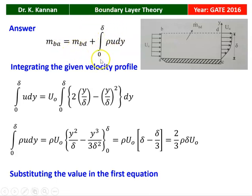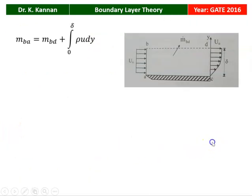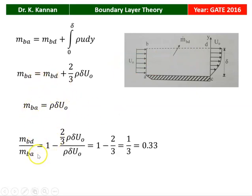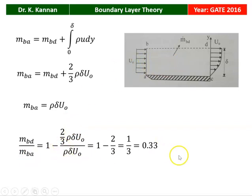Substituting back: MAB equals MBD plus (2/3)·rho·delta·U₀. Since MAB equals rho·delta·U₀, we get MBD by MAB equal to 1 minus 2/3, which is 1/3, which equals 0.33. So the ratio of mass flow leaving the boundary layer across section BD divided by the mass flow entering at the leading edge AB equals 0.33.